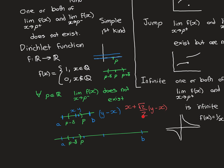We construct a new number: x + (√2 / 2) × (y − x). Since √2 / 2 ≈ 0.707, this lies strictly between x and y, hence inside the interval. This new number must be irrational: if it were rational, then subtracting x (rational) and multiplying/dividing by rational numbers would imply √2 is rational — a contradiction. So we have our irrational number inside the interval.